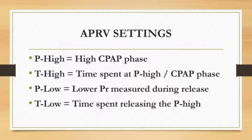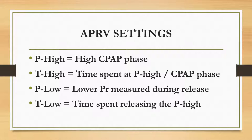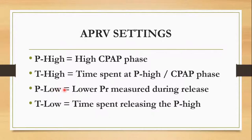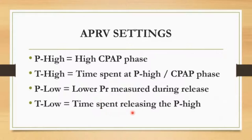When looking at APRV settings, there are four unique settings: P-high, T-high, P-low, and T-low. The P-high is a high CPAP phase, and T-high is the time spent at that P-high/CPAP phase. The pressure low is the lower pressure measured during the release, and T-low is the time spent releasing the P-high. Importantly, P-low is measured, not set — which makes time-controlled adaptive ventilation very unique.